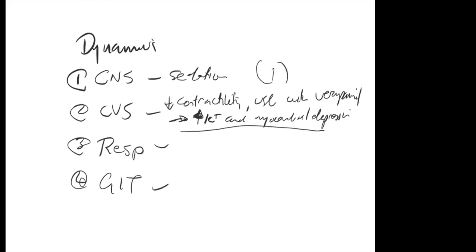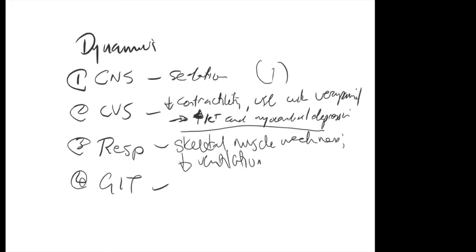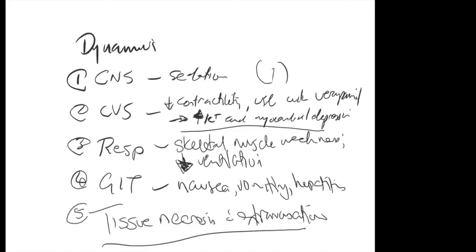For respiratory effects: skeletal muscle relaxation — you get skeletal muscle weakness, which may decrease ventilation. Obviously not an issue when someone is intubated and paralyzed, but something to consider if they're not. GIT effects: very commonly nausea and vomiting, and may also have hepatitis, tissue necrosis with extravasation.